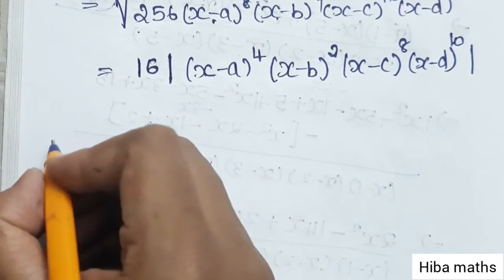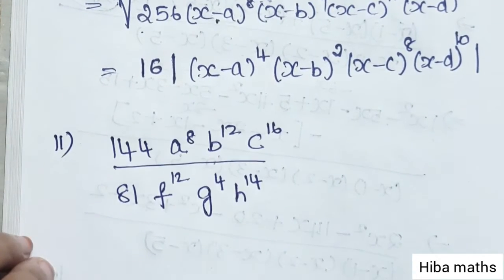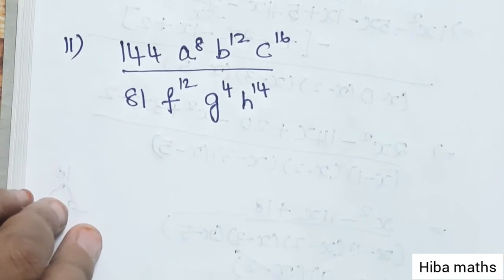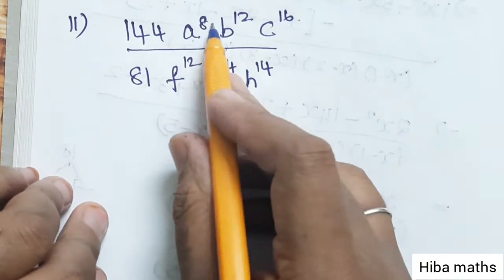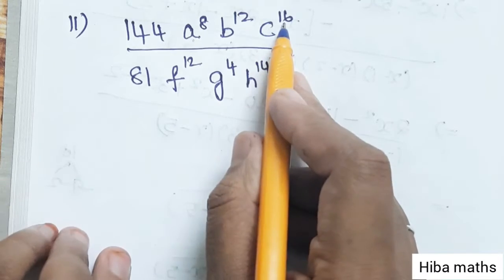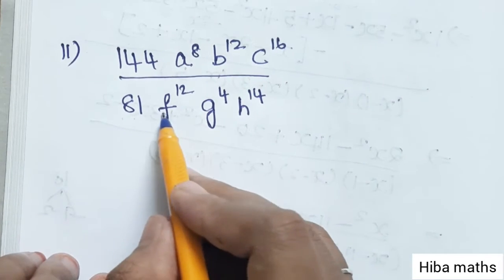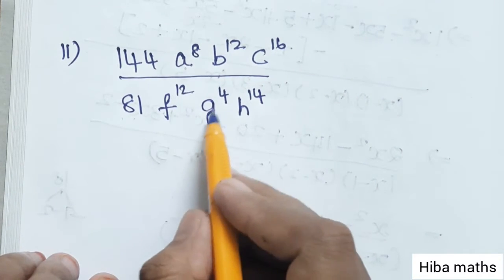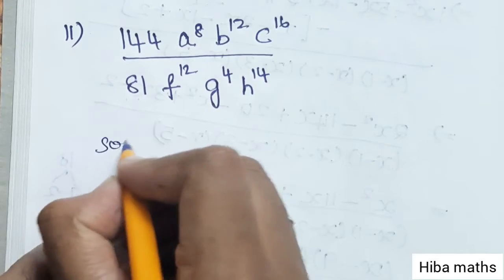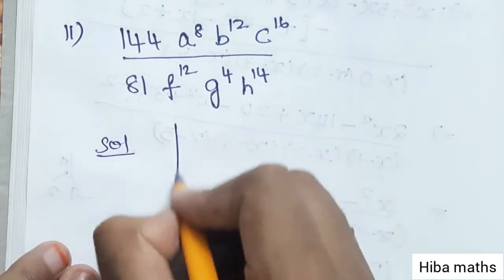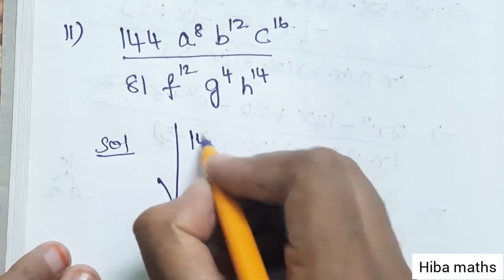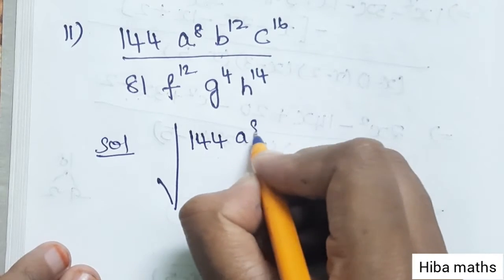Let's see the second question: 144 · a power 8 · b power 12 · c power 16 divided by 81 · f power 12 · g power 4 · h power 14. The solution is to find the square root of the full expression.